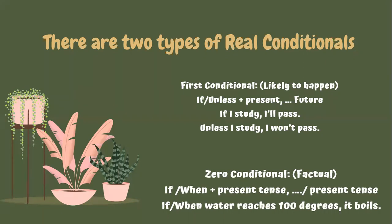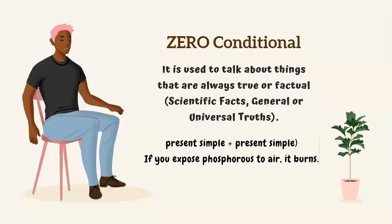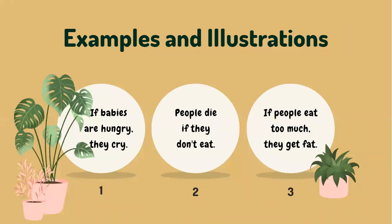In the zero conditional we speak about facts — it is factual. We can say 'if' or 'when water reaches 100 degrees, it boils.' Zero conditional is used to talk about things that are always true: scientific facts, general or universal truths. For example, 'if you expose phosphorus to air, it burns.' The structure is present simple plus present simple.